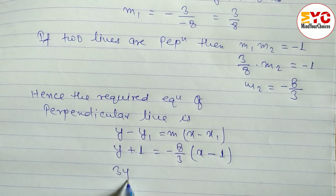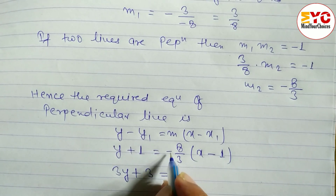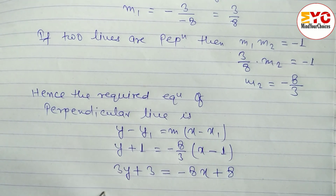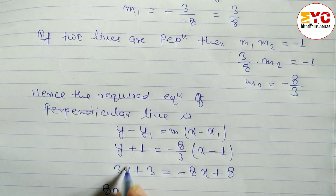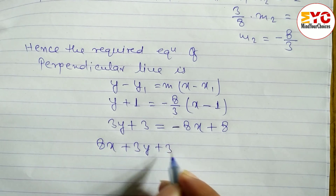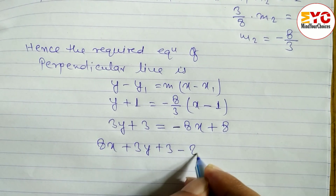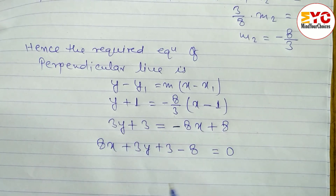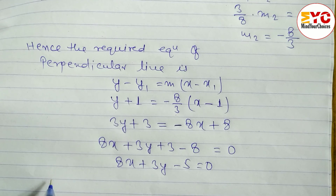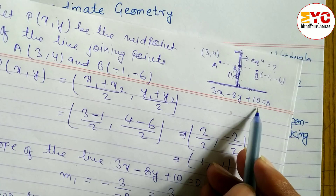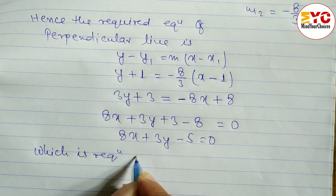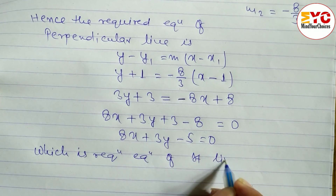Cross-multiplying: 3y + 3 = -8x + 8. Rearranging — bring -8x to the left and +8 to the left: 8x + 3y + 3 - 8 = 0, so 8x + 3y - 5 = 0. This is the required equation of the straight line perpendicular to 3x - 8y + 10 = 0.